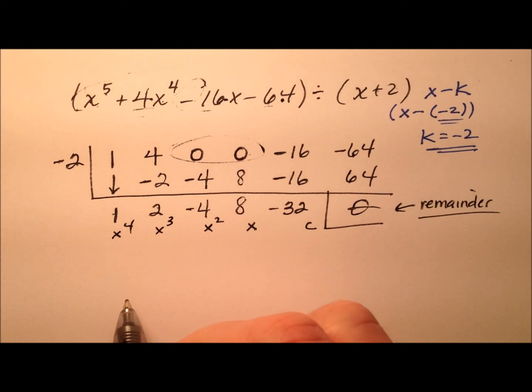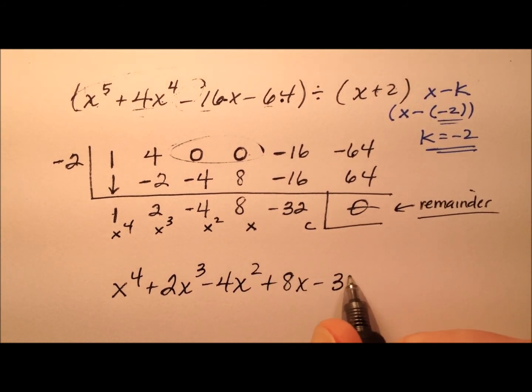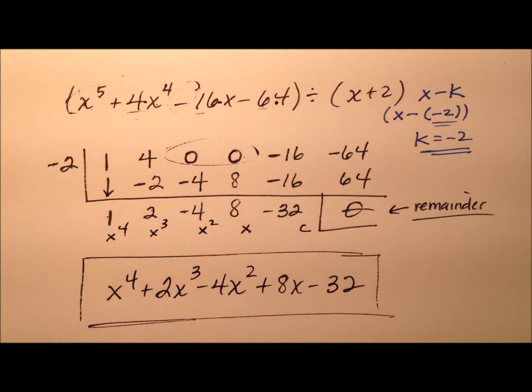So let's write our final quotient. We have x to the fourth plus 2x cubed minus 4x squared plus 8x minus 32. And there is no remainder in this case. So here's our quotient.